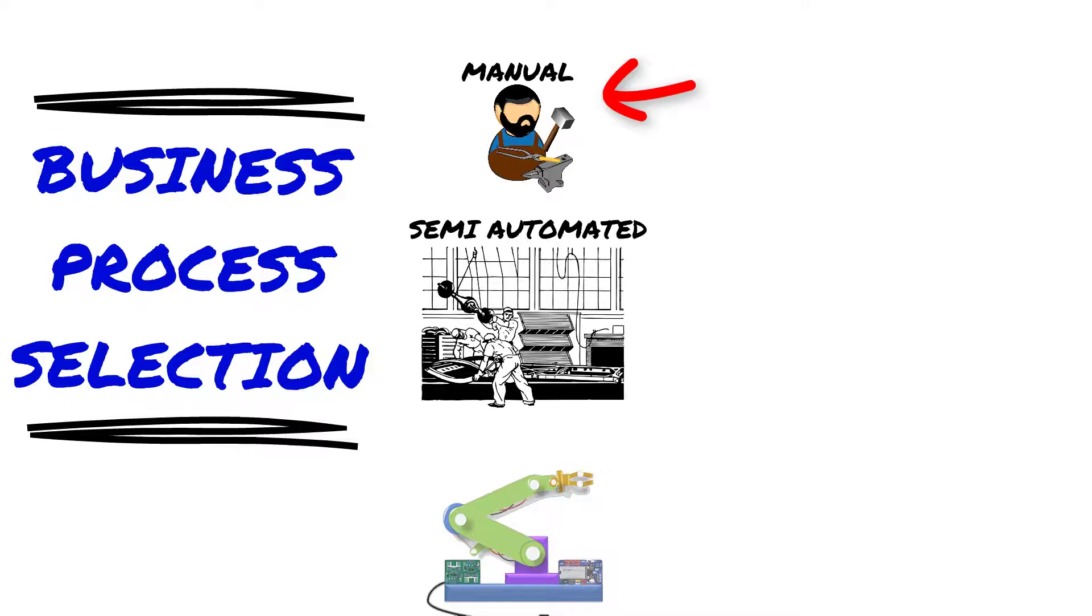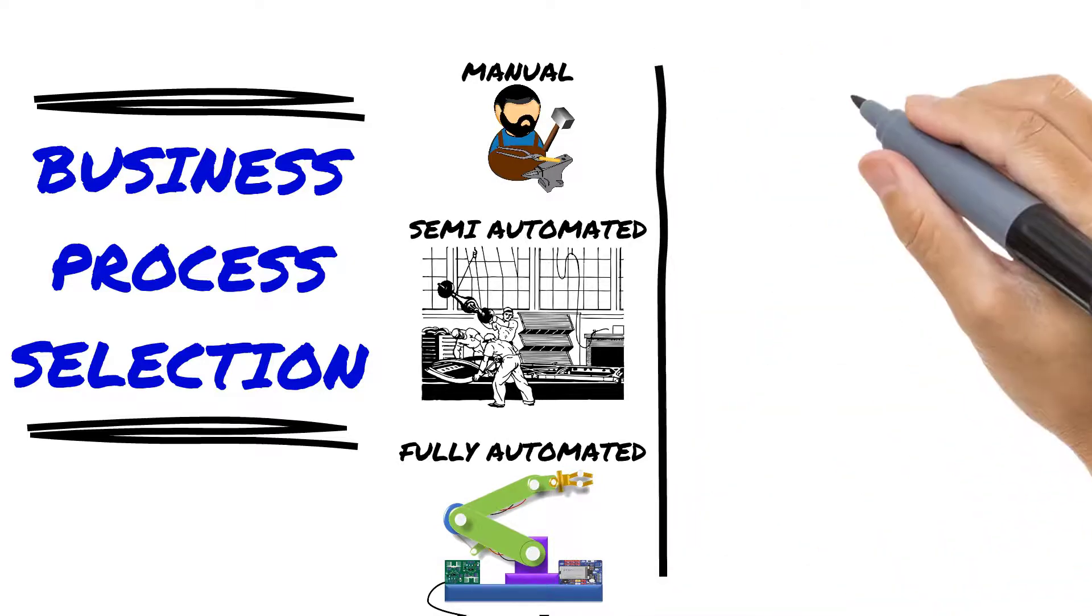The first, a manual process. The second, semi-automated process. And the third, an entirely automated production process.